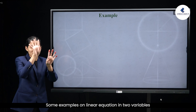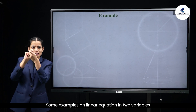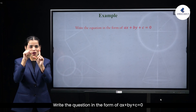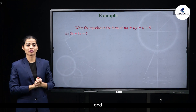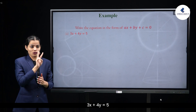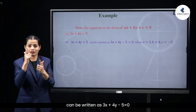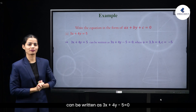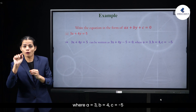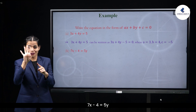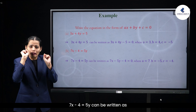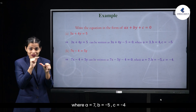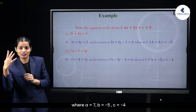Let us see examples on writing linear equations in two variables in the form ax + by + c = 0. Example: 3x + 4y = 5 can be written as 3x + 4y − 5 = 0, where a = 3, b = 4, c = −5. Next, 7x − 4 = 5y can be written as 7x − 5y − 4 = 0, where a = 7, b = −5, c = −4.